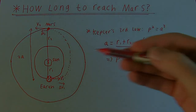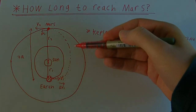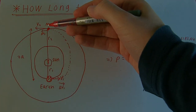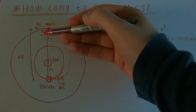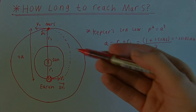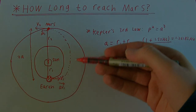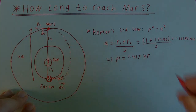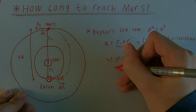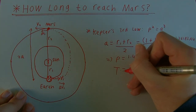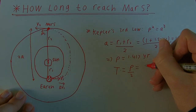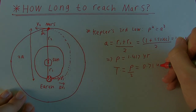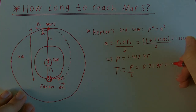The period is the time to travel around the complete elliptical transfer orbit and go back to the start, which is what would happen if you didn't fire delta V2. But we're only travelling along half of the transfer ellipse, so we divide by 2 to get the time to reach Mars. The time to reach Mars is the period divided by 2, which equals 0.71 years — also known as 8.5 months.